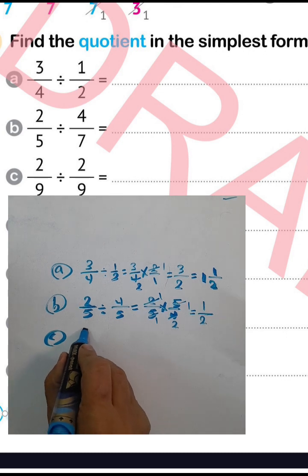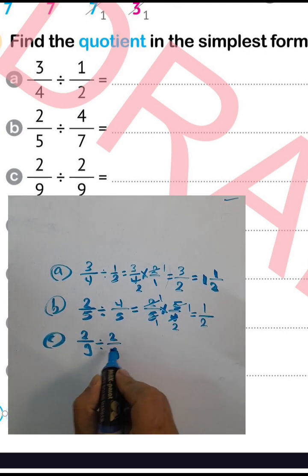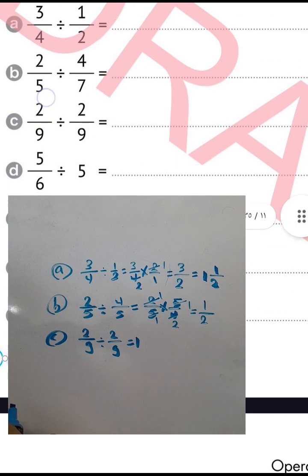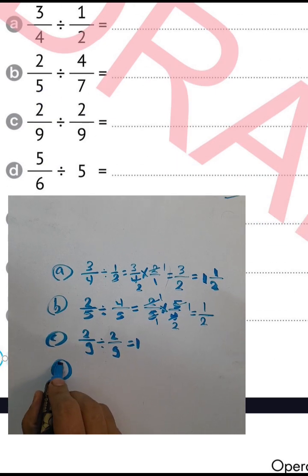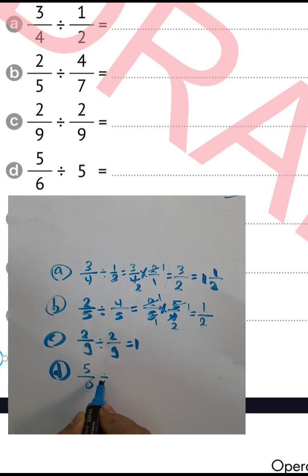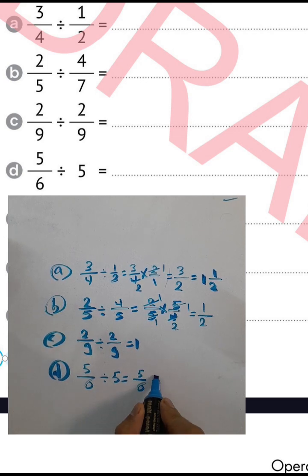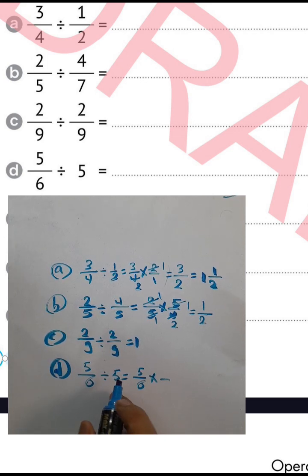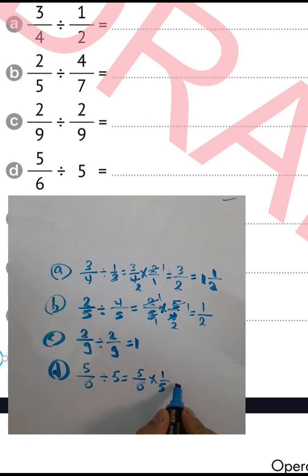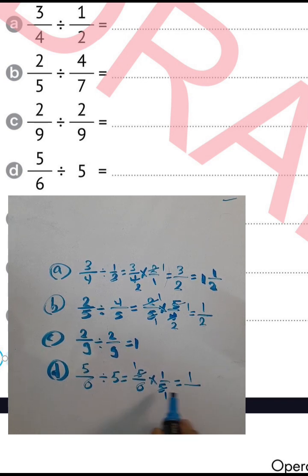Question letter c: 2 over 9 divided by itself equals 1 — any number divided by itself equals 1. Question letter d: 5 over 6 divided by 5. Write 5 over 6, convert from division to multiplication, and raise the inverse of 5 to get 1 over 5. Simplify: 5 divided by 5 equals 1. Then 1 times 1 equals 1, and 1 times 6 equals 6, so the result will be 1 over 6.